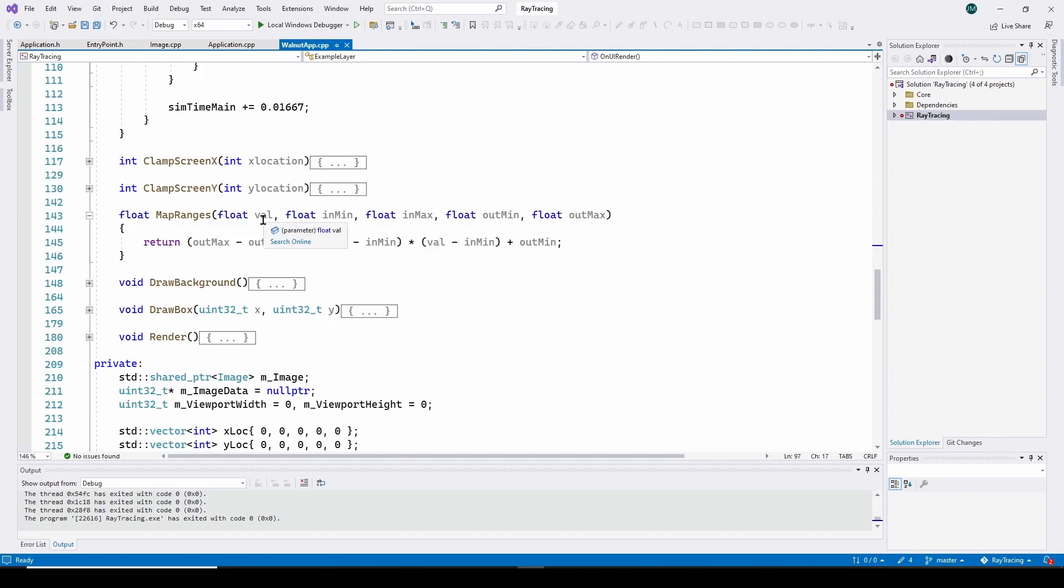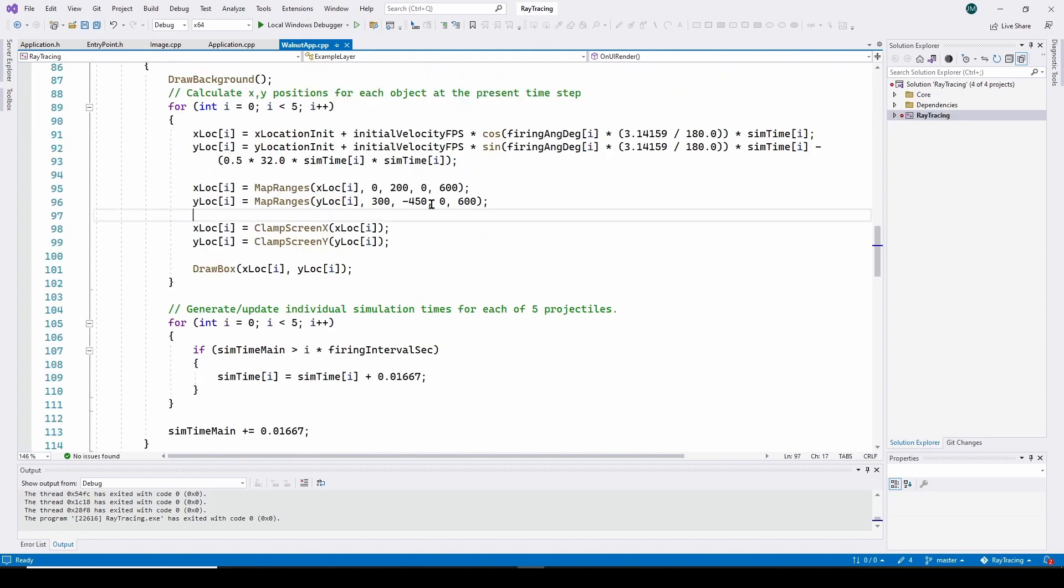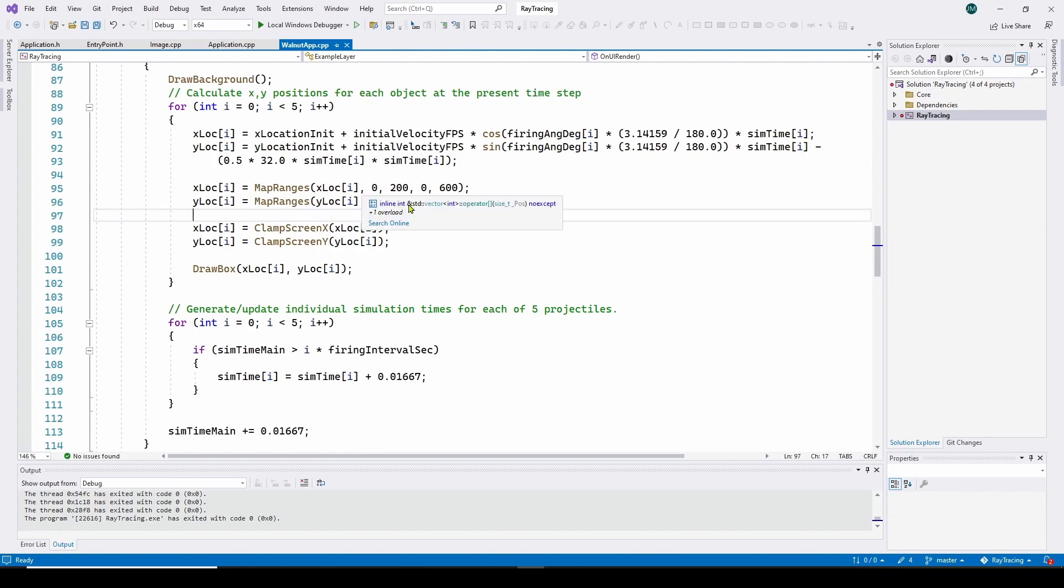We feed it the value that we want to map. The input minimum, input maximum, output minimum, output maximum. And it just returns that equation we just talked about. So really straightforward. You just feed it the input range and the output range, and it converts your input value to an output value proportional.